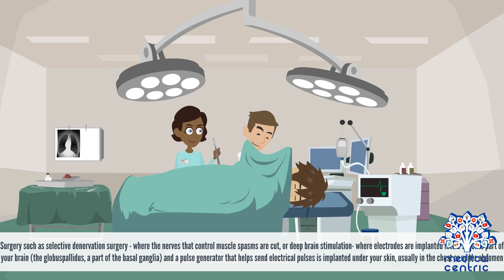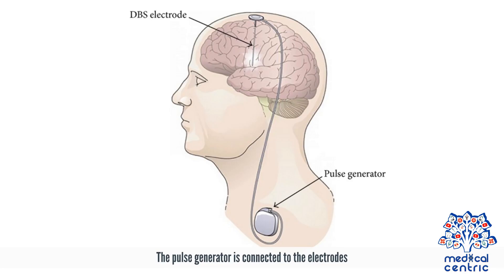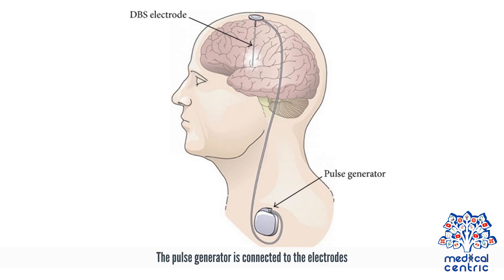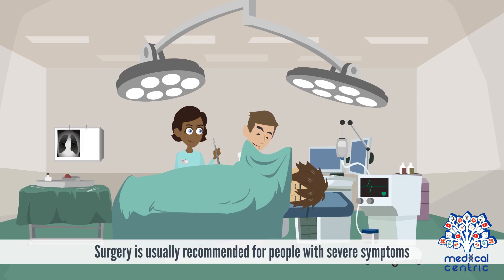Surgery options include selective denervation surgery, where the nerves that control muscle spasms are cut, or deep brain stimulation, where electrodes are implanted into the globus pallidus, a part of the basal ganglia. A pulse generator implanted under the skin – usually in the chest or upper abdomen – is connected to the electrodes and emits signals to the globus pallidus to block the abnormal nerve impulses created by the basal ganglia. Surgery is usually recommended for people with severe symptoms.